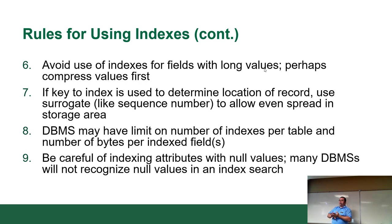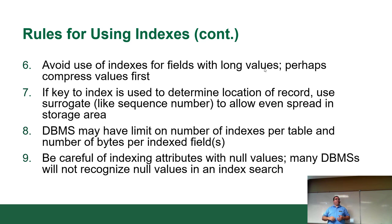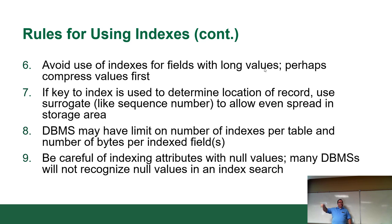If the key of the index is used to determine the location of a record, use a surrogate key — such as a sequence or auto-increment primary key — to allow it to spread evenly. Sometimes people create an extra column just to track sort order. For example, on websites where Canada and the US appear at the top of a country dropdown, and every other country is alphabetical, that's a sort order column where certain countries are given priority.